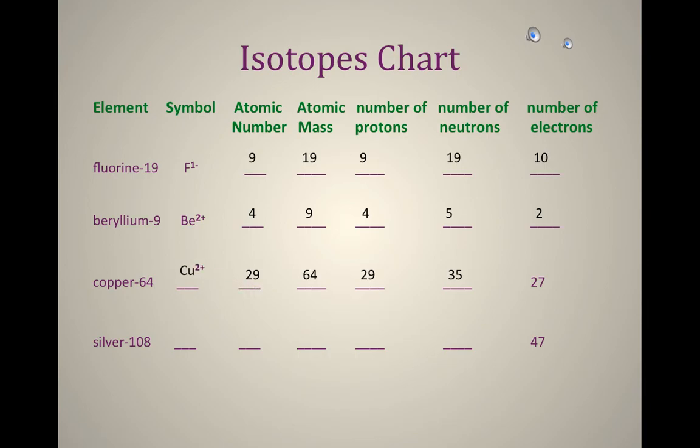And then silver-108, we know silver, that 108 goes right here for mass, lives at 47, so 47 there, 47 there, and then we're going to go 108 minus 47 to get our 61 neutrons, and we're going to see 47, we're going to just have an atom of silver. So that's how you work out the logic, how those things get filled in.